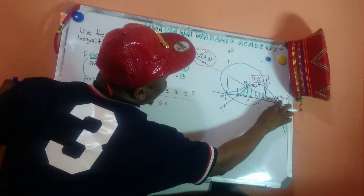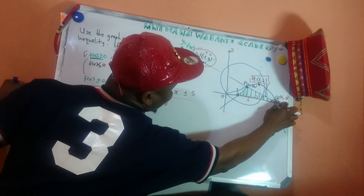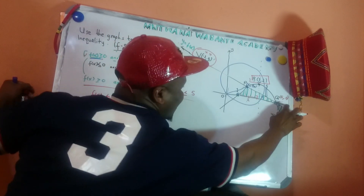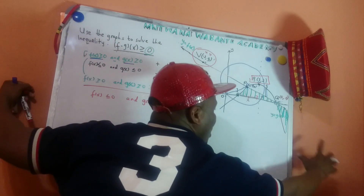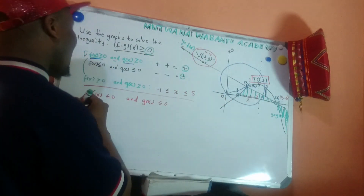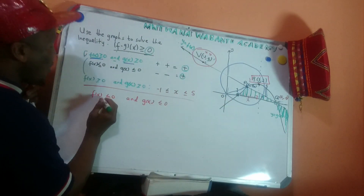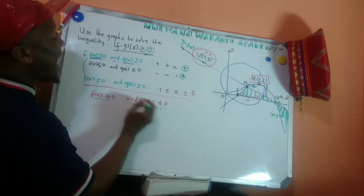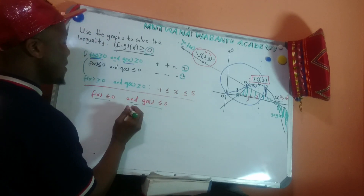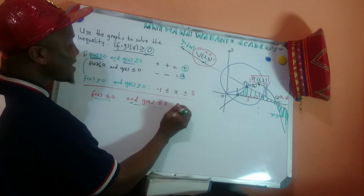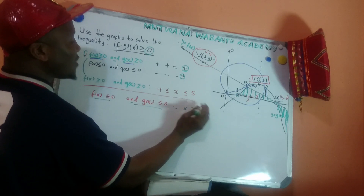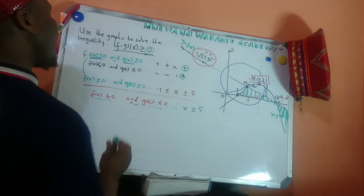From x = 5 the graph continues all the way to positive infinity, with both the line and the parabola below the x-axis. So the value of x when f(x) < 0 and g(x) < 0 is x ≥ 5, meaning from five to positive infinity.